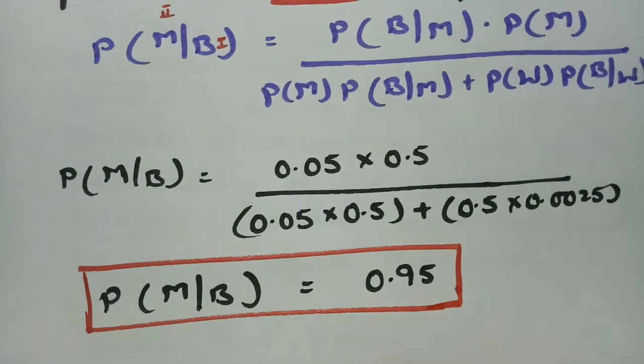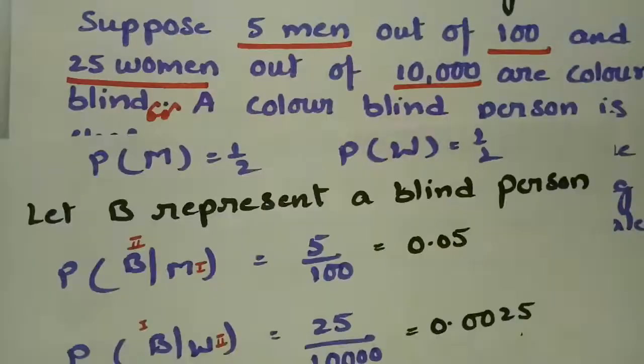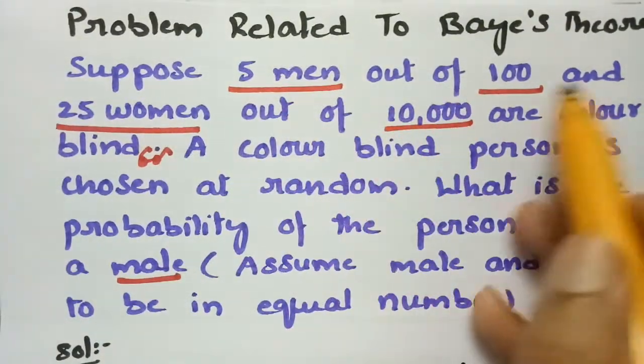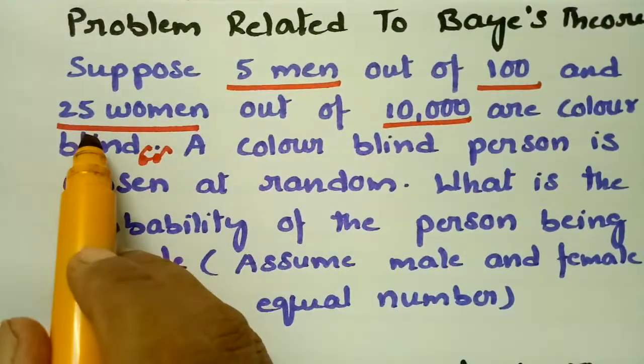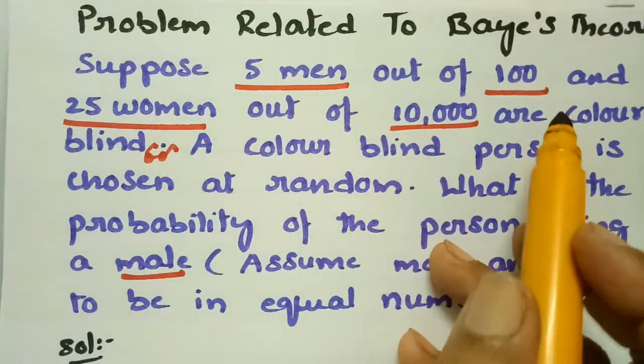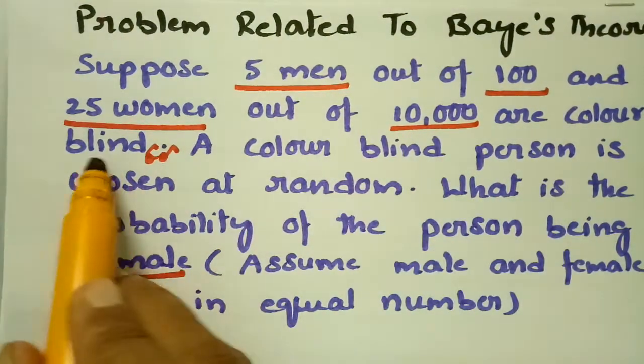After calculating, the probability that the chosen colorblind person is male comes out to 0.95. So, given that 5 men out of 100 and 25 out of 10,000 women are colorblind, the answer is 0.95.